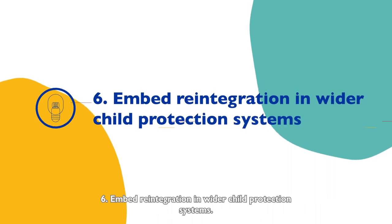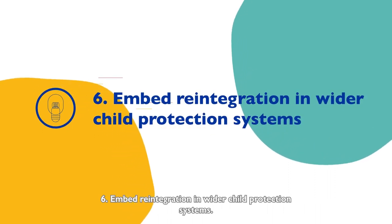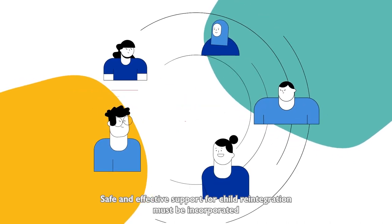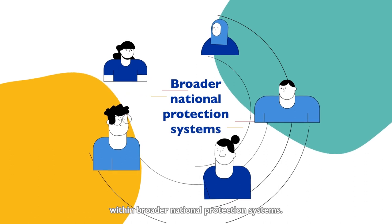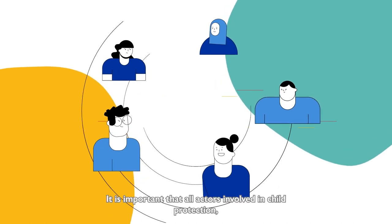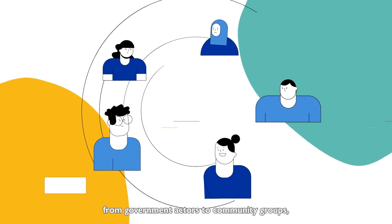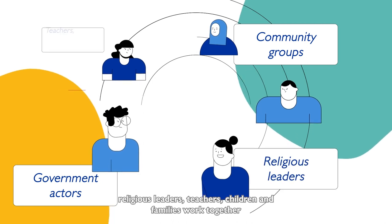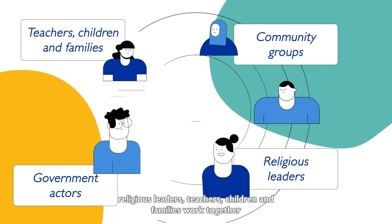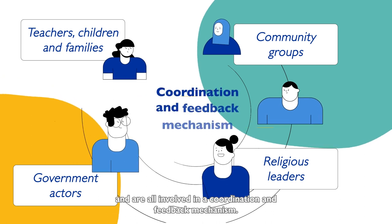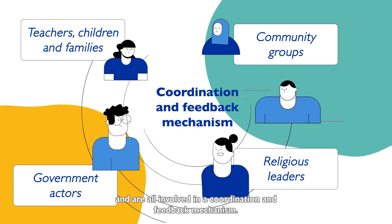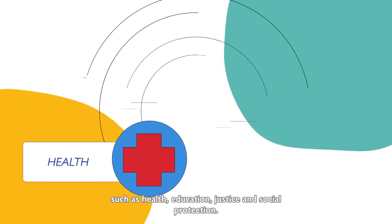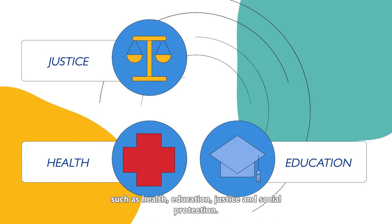6. Embed reintegration in wider child protection systems. Safe and effective support for child reintegration must be incorporated within broader national protection systems. It is important that all actors involved in child protection, from government actors to community groups, religious leaders, teachers, children and families, work together and are all involved in a coordination and feedback mechanism. It is also vital to actively engage with other policy sectors, such as health, education, justice and social protection.